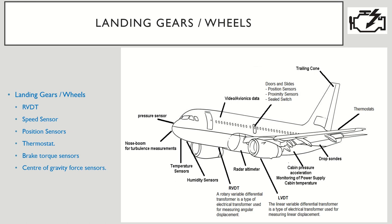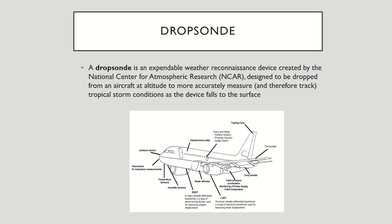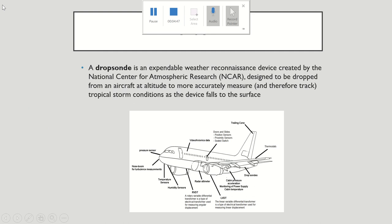The flight deck has many sensors, but highlighting a few here: the flap selector — the wings have many flaps that go up and down, and this flap selector is in the flight deck — along with thermostats and precision potentiometers, which are most importantly used in the flight deck. There are many other sensors as well, but I am highlighting just the ones I am most clear about.